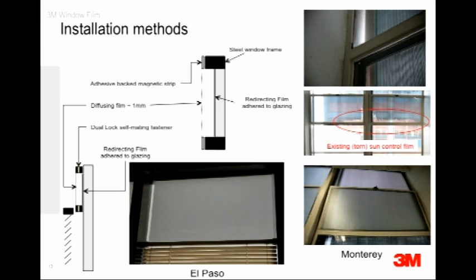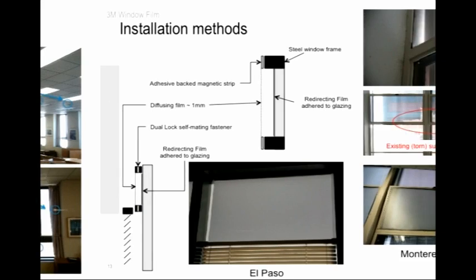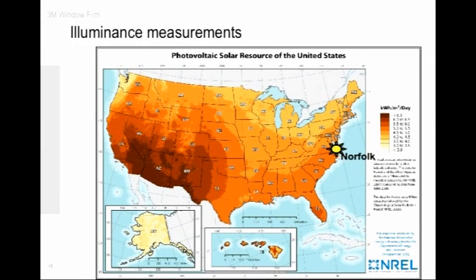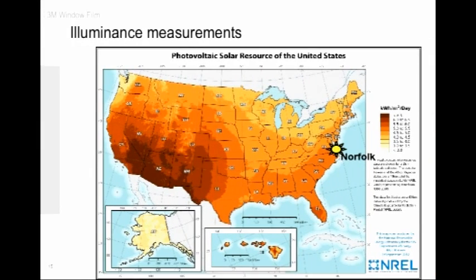Illuminance measurements were taken at both the ceiling level and the desk level, and also compared to how much light was incident on the window. Lots and lots of data was collected. The hard part was really analyzing it and making sense of it from these different sites, which was obviously challenging. Today I'm just going to condense it down and talk about the data from Norfolk, Virginia.